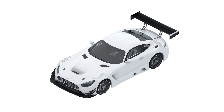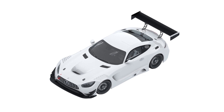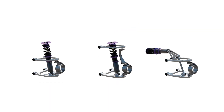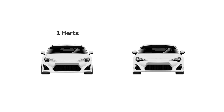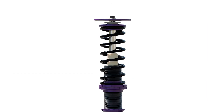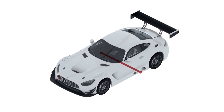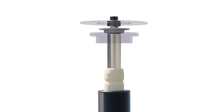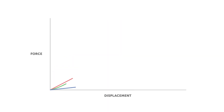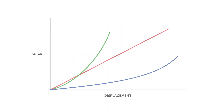You'll learn about the purpose and role of suspension, the different suspension types, suspension frequency and motion ratios, before moving on to different types of springs, anti-roll bars and bump stops — why we use them and how each of them work.